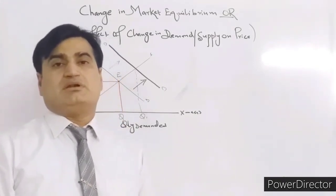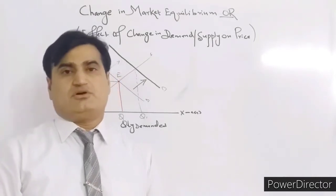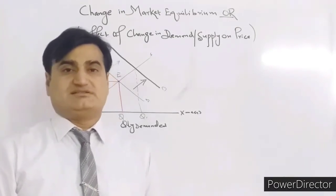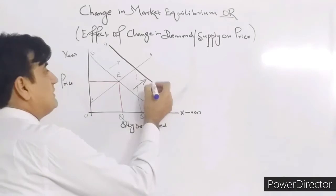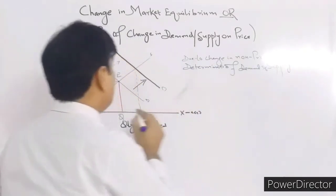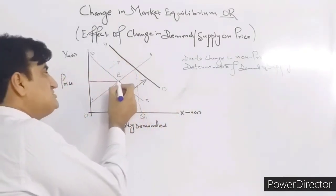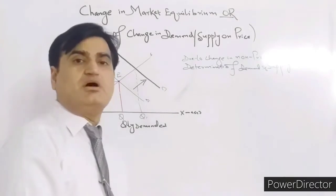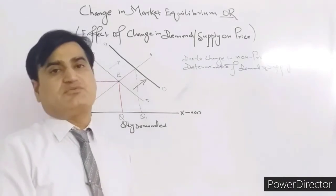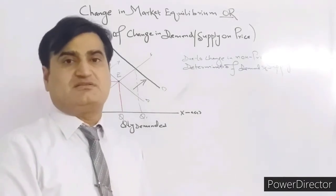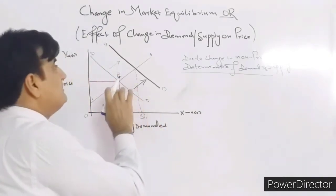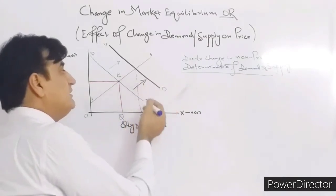The equilibrium position is disturbed due to change in non-price determinants of demand. I have already given a lecture on determinants of demand and supply — you can go through that video. The equilibrium is changed due to non-price determinants like change in price of substitute goods, change in price of complement goods, change in income of consumer, taxes and preferences, advertisement expenditure, and so on.